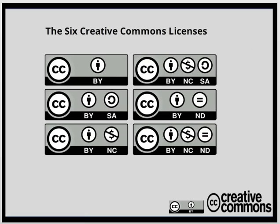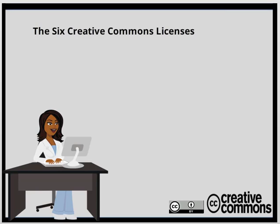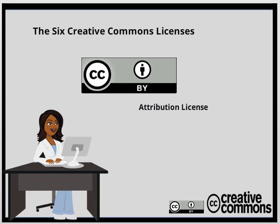Now on to the six licenses. Here are the six Creative Commons licenses at a quick glance. We are going to take a look at each one specifically over the next six slides. In an overarching thought, these licenses are global, but they are built within copyright laws and have to be looked at specifically for each country. The first license is the attribution license, or CC BY. It allows people to use the work for any purpose, even commercially and even in a modified form.